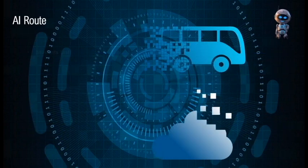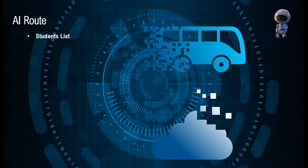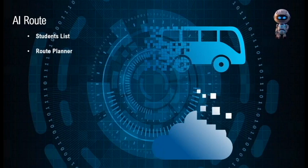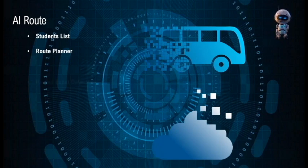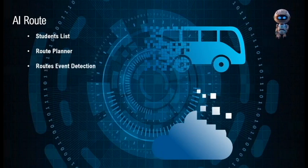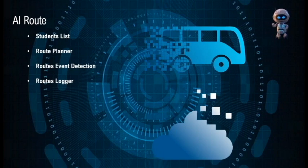AI route features: The smart school bus administration will have the ability to manage students with their geo-location for the pickup and drop-off route planner. The system will help drivers with a map to use the shortest and least traffic routes for their daily pickup and drop-off routes. For event detection, the system will identify if any sudden events happened in their daily route from internet sources.